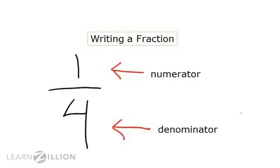We also know that when we write fractions, we write them in a special way with a numerator on the top. The numerator tells us the parts that we are thinking about, and then the denominator on the bottom. The denominator tells us the total number of equal parts in the whole. It is very important to know that when we break a whole into equal parts or fractions, when we put all of those equal parts back together, we get the whole that we started with.